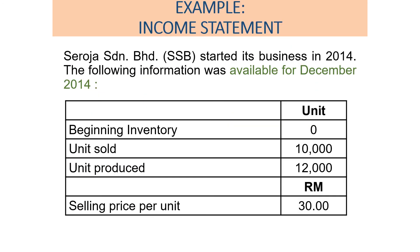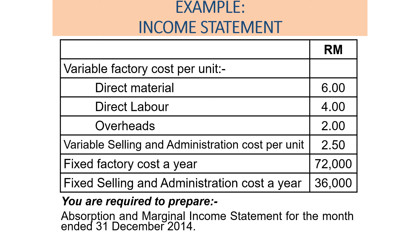Now let's look at the income statement example. Serajas Nyamrahan SSB started its business in 2014. For December 2014: beginning inventory zero, units sold 10,000, units produced 12,000, selling price RM30 per unit. Variable factory cost per unit — direct material RM6, direct labor RM4, overhead RM2, variable selling RM0.50. Fixed factory cost RM32,000 per year, fixed selling and administration cost RM36,000 per year. Prepare absorption and marginal income statements for the month ended 31 December 2014.